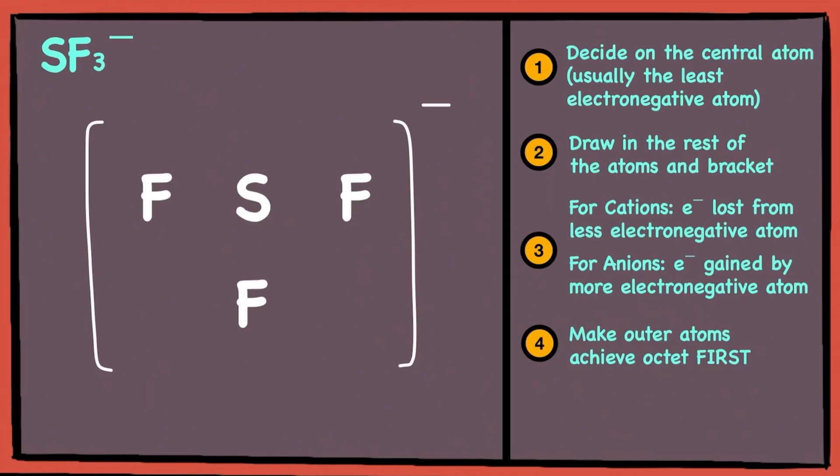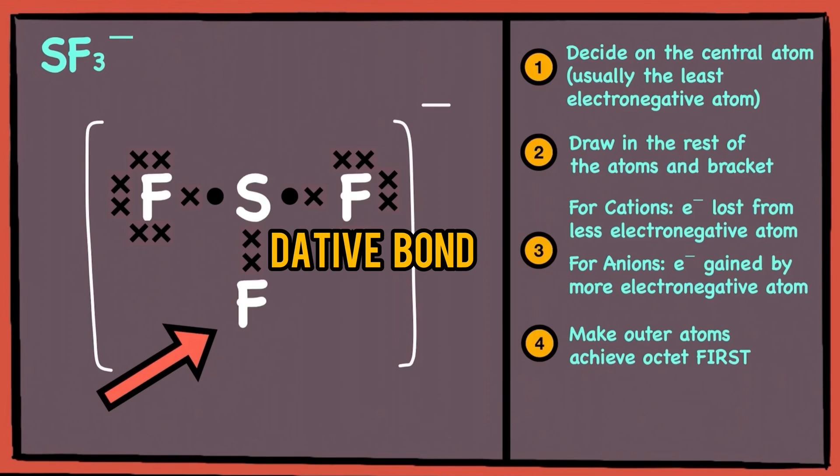So, fluorine and sulfur will each contribute 1 electron, forming covalent bonds and achieve octet for these 2 fluorine atoms. Take note that for the fluorine atom that gained the electron, since it is already in octet configuration, it will donate a pair of electrons to the central sulfur atom in what we call coordinate or dative bonding.